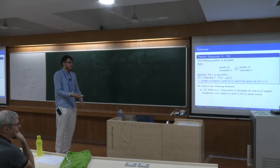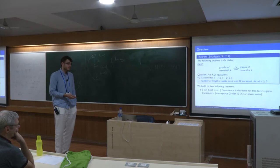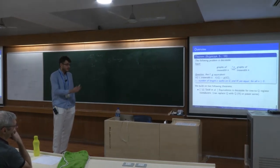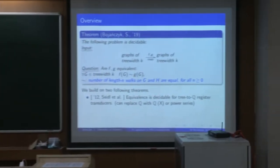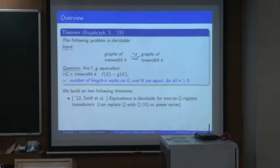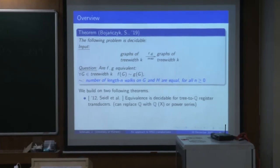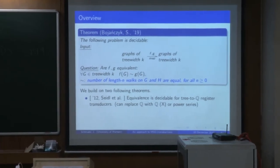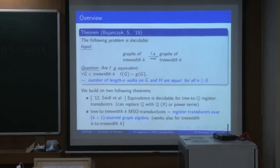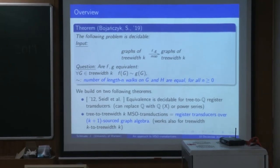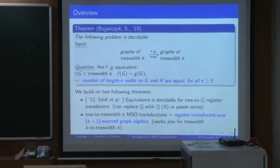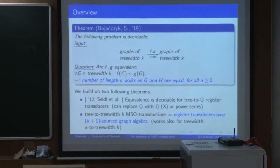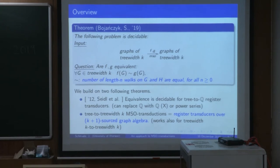The proof is built on two theorems. One is that equivalence is decidable for string to Q register transducers, although Q can be replaced with some other rings. This result was already mentioned today. And also that MSO transductions that we are dealing with admit a characterization by register transducers but over source graph algebra, which we will define later.